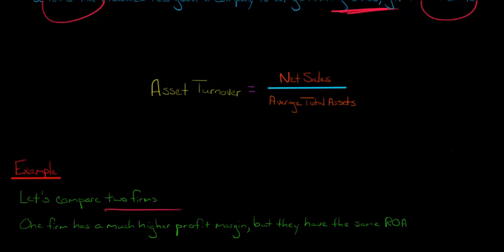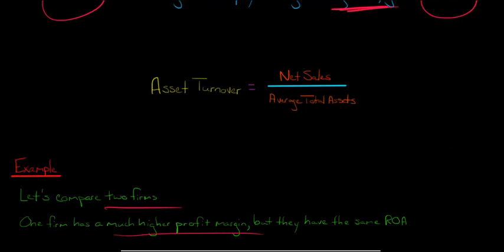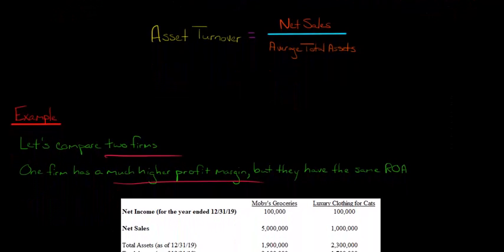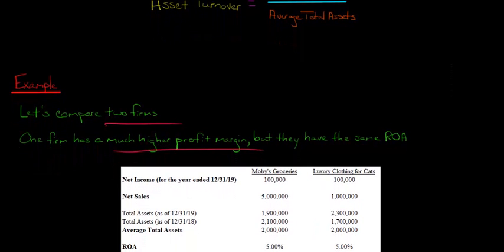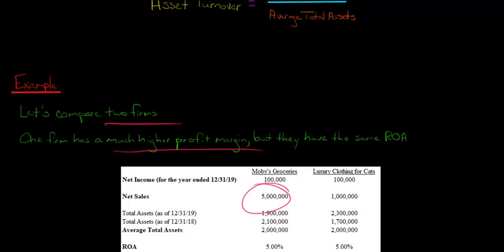So let's say that we have two companies — one of them has a much higher profit margin, and yet they both have the same ROA. It's not always going to be that way in real life; I'm just giving you this as an example to show why the asset turnover ratio is important. So let's say we've got Moby's Groceries with $100,000 in net income, and Luxury Clothing for Cats also with $100,000 in net income. Moby's had $5 million in sales, Luxury Clothing for Cats had $1 million in sales, and the average total assets I've calculated is $2 million for each company.